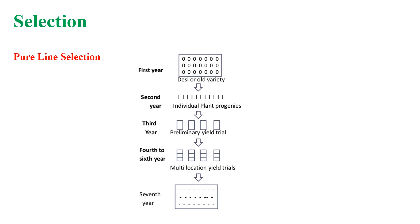Multi-location yield trials begin from the fourth to sixth year. Disease resistance and quality tests are done during these multi-location yield trials. During the seventh year of pure line selection, a progeny superior to the check variety is released as a new variety.